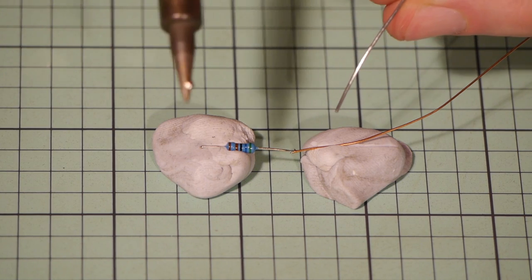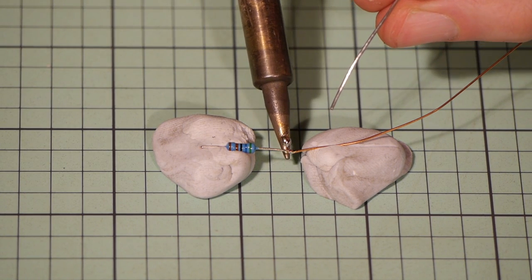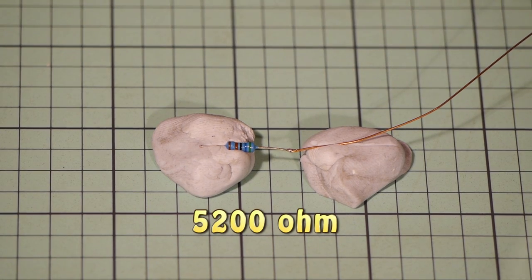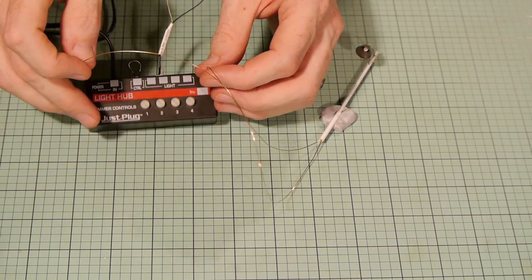If you plan to power this with a 9 or 12 volt power supply you'll need a resistor. This one is a 5200 ohm resistor and I plan to use it with the Woodland Scenics Just Plug lights so I can easily dim the light to my desired level.